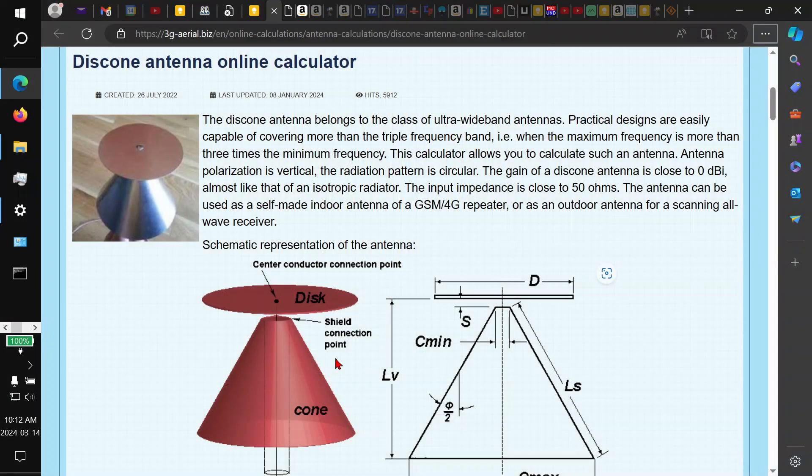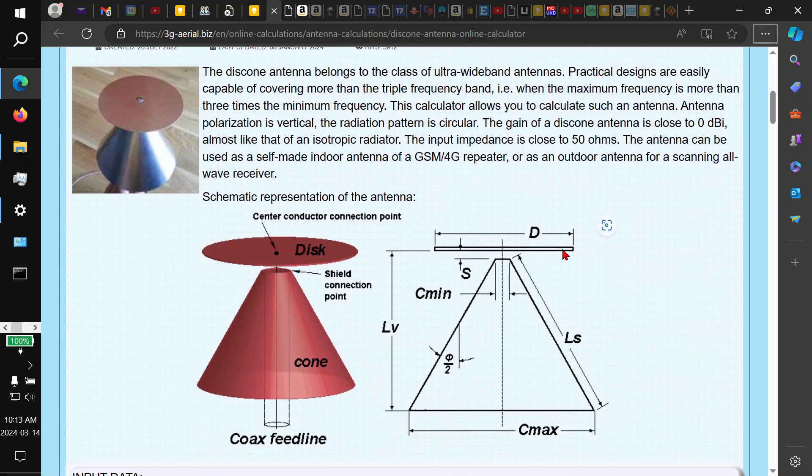This is a calculator - there are quite a few online calculators for antennas. This one is from 3g-aerial.biz, which I'll put in the link below. This shows a theoretical disc and cone, which is not what I have, but I've got something that hopefully gets close to it. Important parameters are the diameter of the disc D, and the length of the radials pointing down which form a virtual cone, that's LS. Then I check I've got it right by measuring the height LV and the diameter at the bottom C max. If it doesn't look right, I just bend these until they fit.